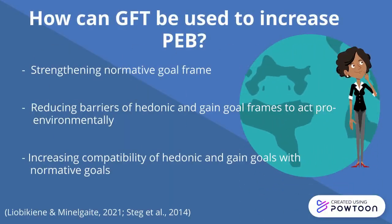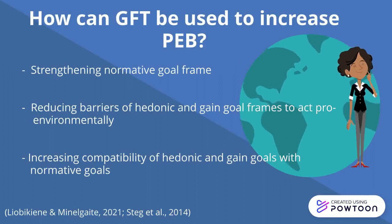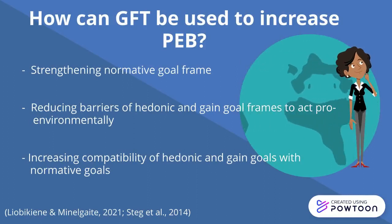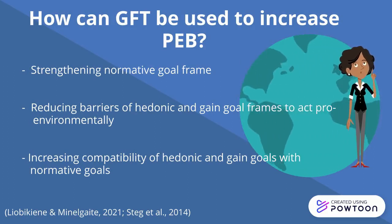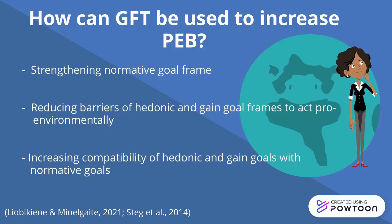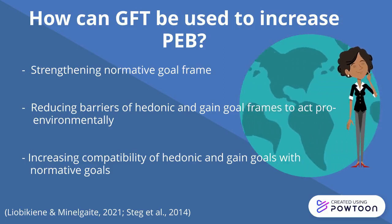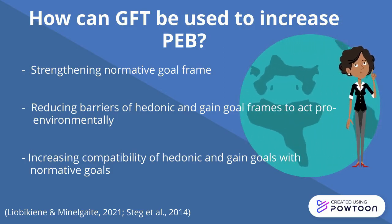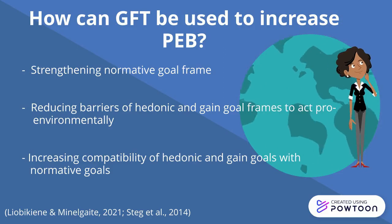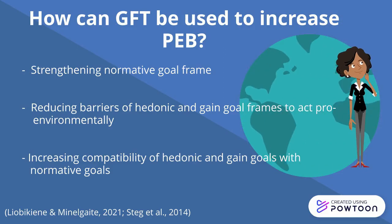Goal Framing Theory can be used to increase pro-environmental behaviors by strengthening the Normative Goal Frame, by reducing barriers of Hedonic and Gain Goal Frames to act pro-environmentally, or by increasing the compatibility of Hedonic and Gain Goals with normative goals.